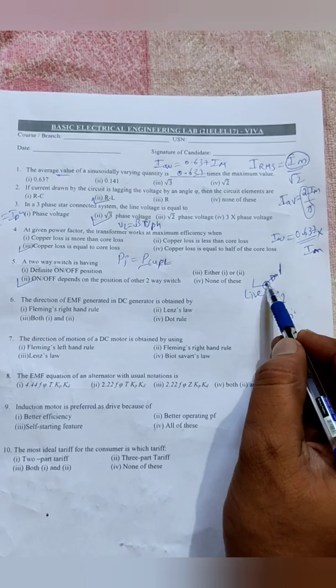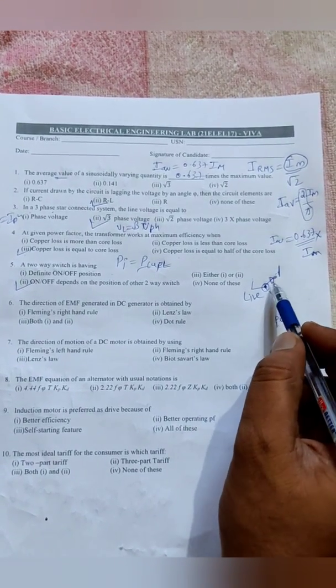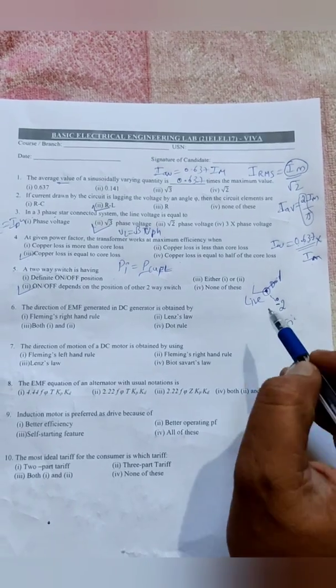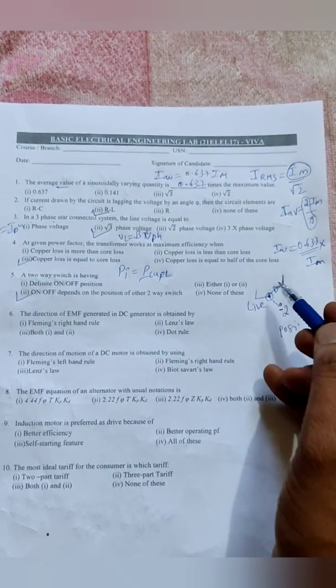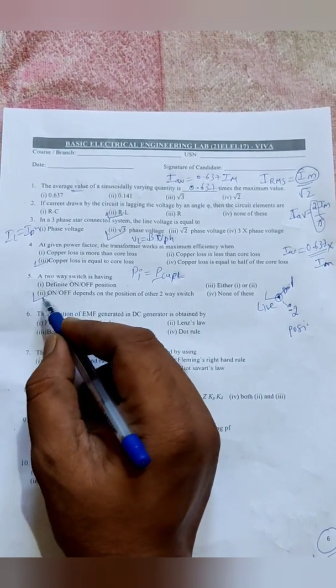Therefore on and off depends on the position of other two-way switch, but it is not definite on or definite off. It is having position changing terminals. We can connect either top side or bottom side. Got it? So second option is correct.